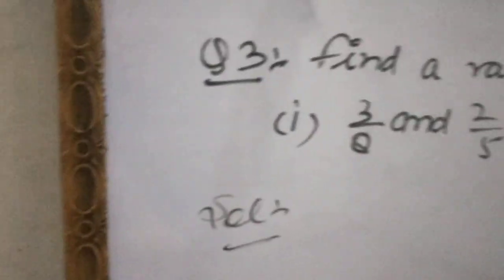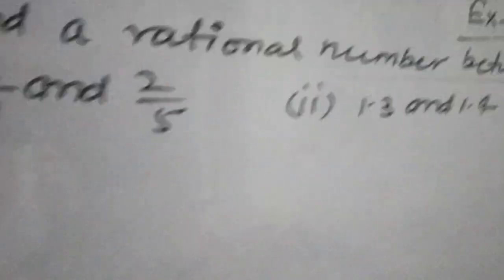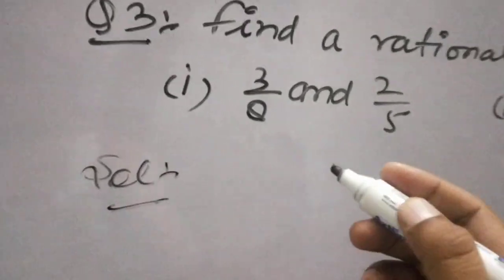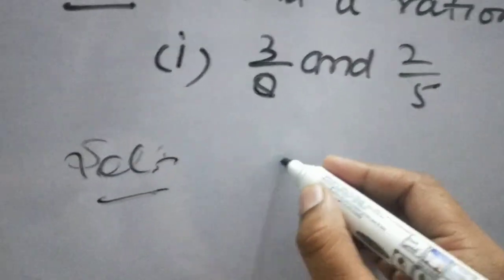First, I solve question number first point: 3 upon 8 and 2 upon 5. To find the rational number between, yesterday I explained the formula. The rational number between A and B...